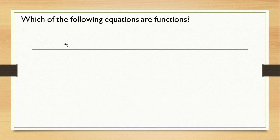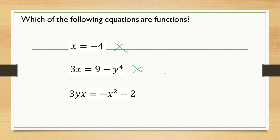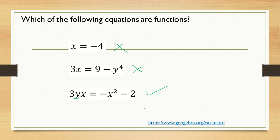Which of the following equations are functions? Let's determine: x = −4 — is it a function or not? The answer is no, it is not a function. Next, 3x = 9 − y⁴. From the basis that it is not a function if the variable y is raised to an even exponent, therefore this is not a function. How about 3yx = −x² − 2? Looking at your y and looking at your x, basing from our definition, yes it is a function. These examples are based from geogebra.org/calculator.